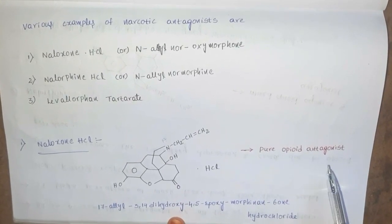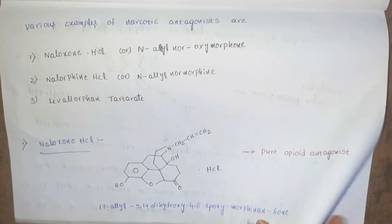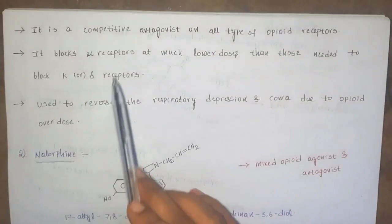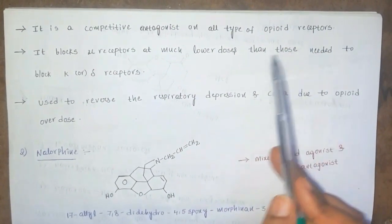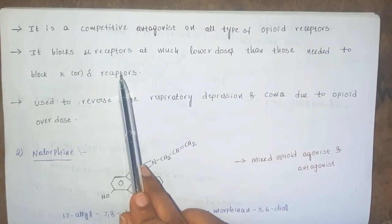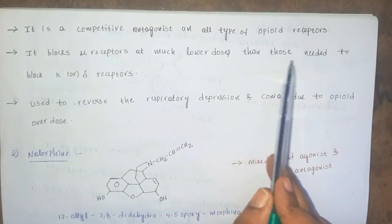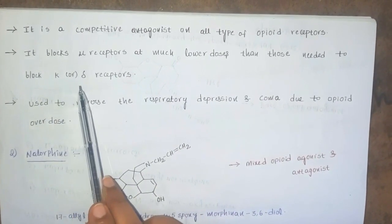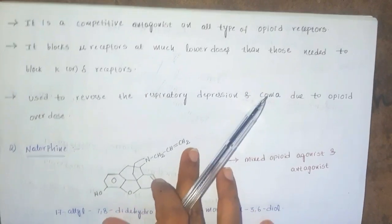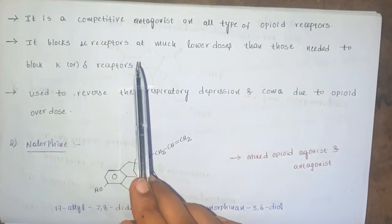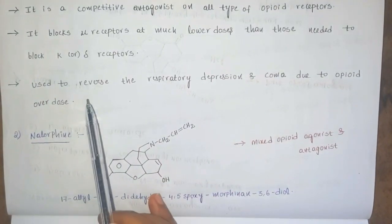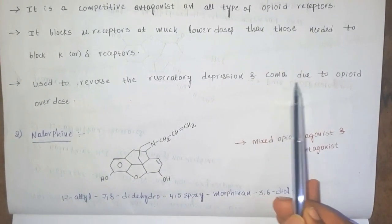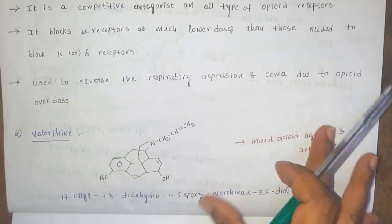Naloxone comes under the pure opioid antagonist class. It is a competitive antagonist on all types of opioid receptors. It blocks mu receptors at much lower doses than those needed to block kappa or delta receptors. It is used to reverse respiratory depression and coma due to opioid overdose.